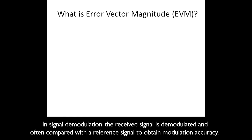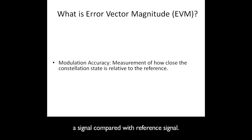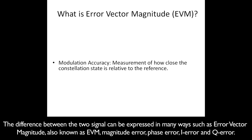In signal demodulation, the received signal is demodulated and often compared with the reference signal to obtain modulation accuracy. Modulation accuracy is a measurement of signal quality obtained by subtracting the measured signal from the reference signal, and it generally involves precision demodulation compared with the reference signal. The difference between the two signals can be expressed in many ways, such as error vector magnitude (EVM), magnitude error, phase error, I error, and Q error.